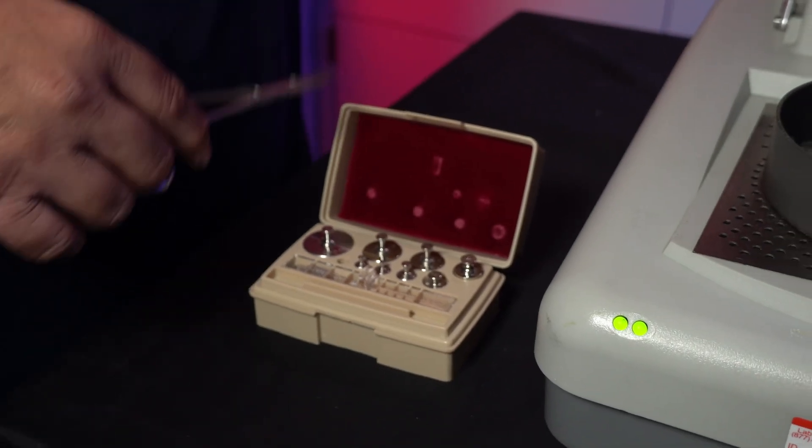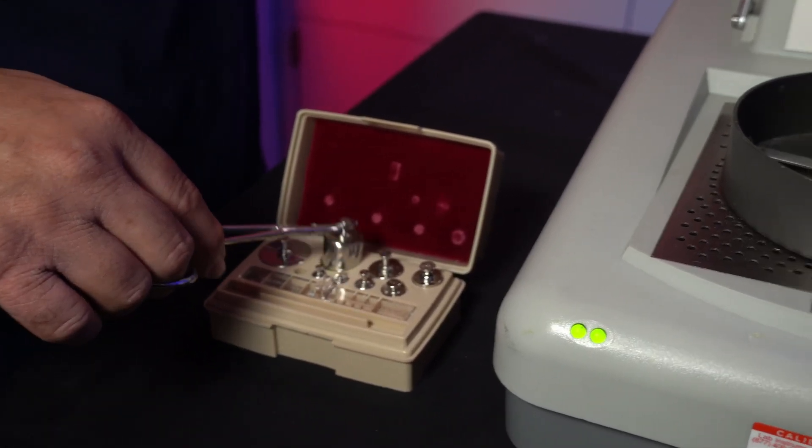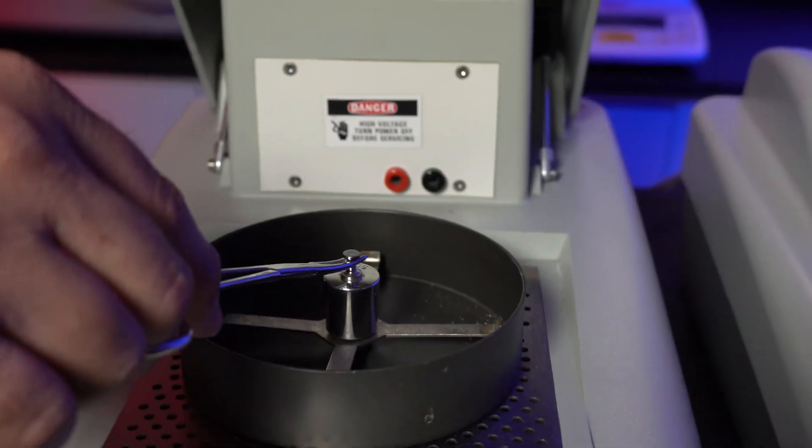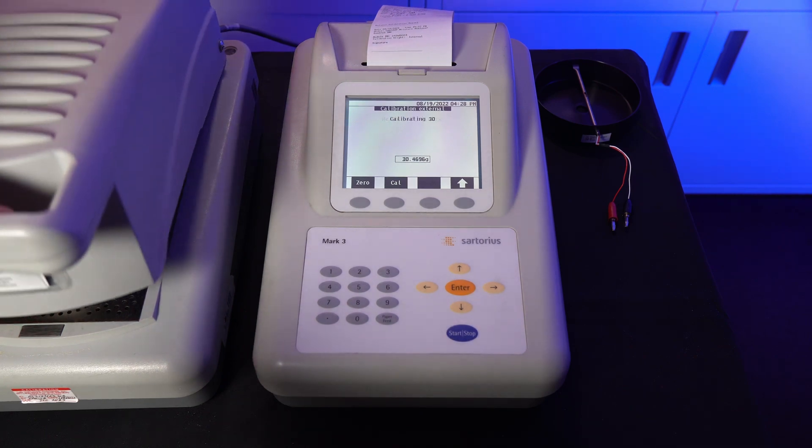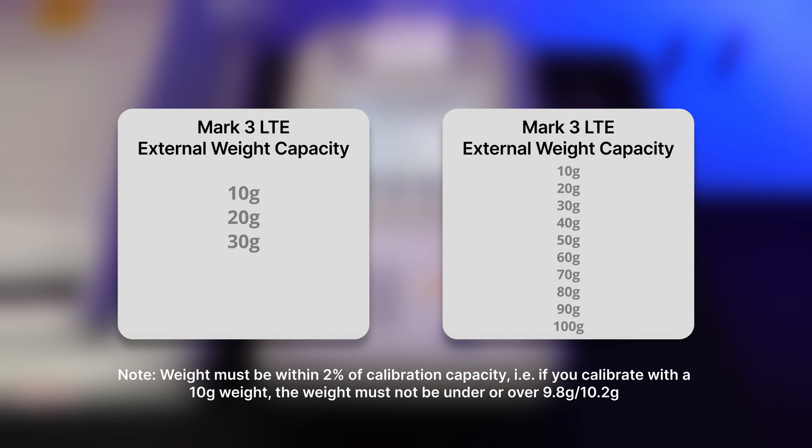Now into the balance weight calibration. Both the HP and LTE can use external weights to calibrate the balance, although due to their different balance capacities they have different weight limits for calibration. Feel free to pause the video here to see what weights work with their corresponding model. I will be conducting the weight calibration on the HP model.